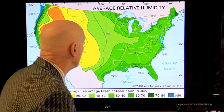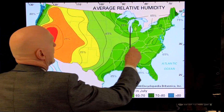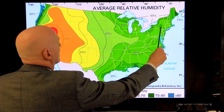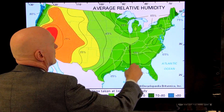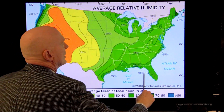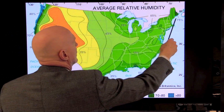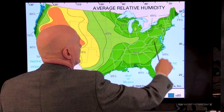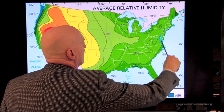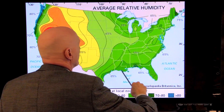We now have a profile of our average relative humidity that looks a lot like our rainfall — average relative humidity and rainfall are very similar. This part of the country, mainly east of the Mississippi River, has relative humidities anywhere from 45% to 75%, more pronounced along the coastlines.